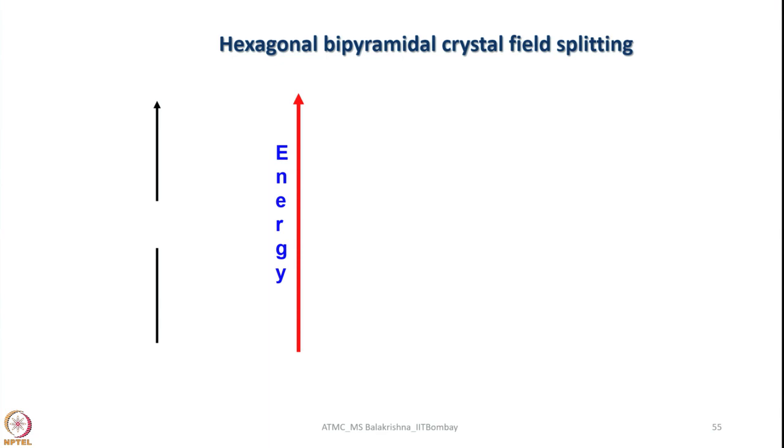So now let me write crystal field splitting diagram for this one. So 5 are there here. Obviously you can make out which is this one the orbitals that are least affected when you visualize hexagonal bipyramidal molecule are dxz and dyz. And the maximum affected orbital is dz square because 2 ligands are coming right in the same direction.